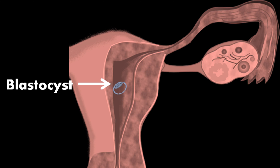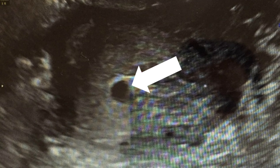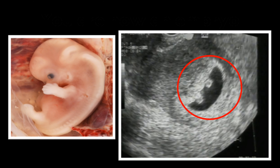Now the blastocyst gets attached to the inner wall of the uterus. For the next 8 months, you will get all the nutrients from the mother's body through the connection with the uterus. Then you grow further and get more cells.